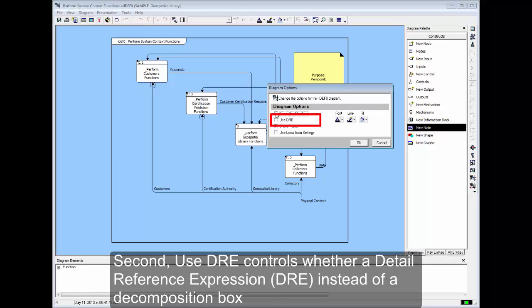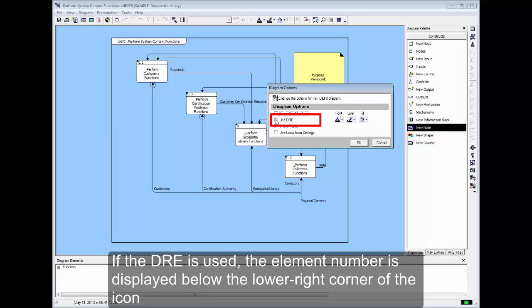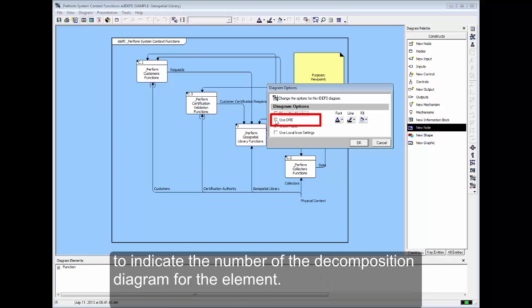Second, Use DRE controls whether a detail reference expression, instead of a decomposition box, in the upper right corner represents that an additional layer of detail exists. If the DRE is used, the element number is displayed below the lower right corner of the icon to indicate the number of the decomposition diagram for that element.